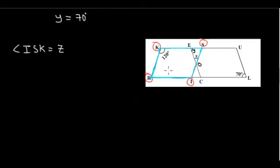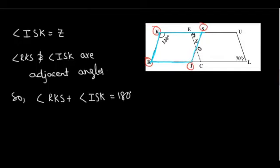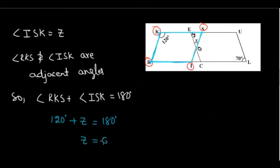In parallelogram RISK, angle K and angle S are adjacent angles, so they are supplementary. That means their sum should be equal to 180 degrees. So the sum of angle RKS and angle ISK is equal to 180 degrees. We have angle RKS given as 120 degrees, and we assumed angle ISK to be Z. Therefore, 120 plus Z equals 180 degrees, and we get Z by subtracting 120 from 180. Thus Z equals 60 degrees.